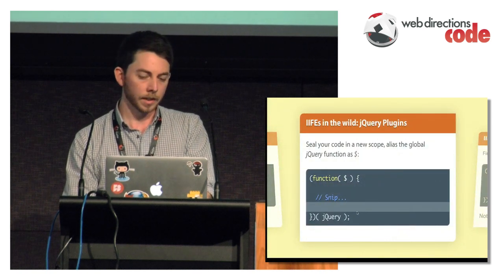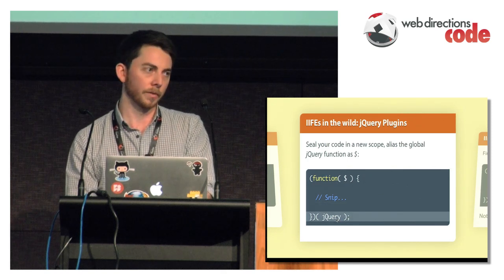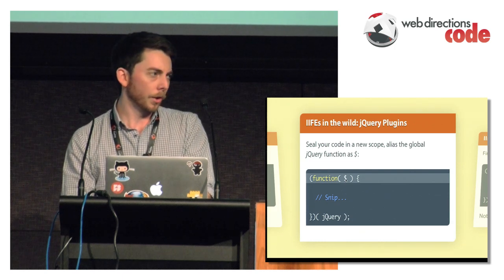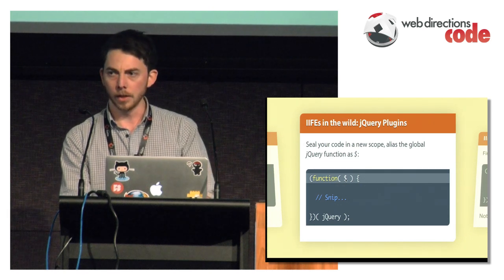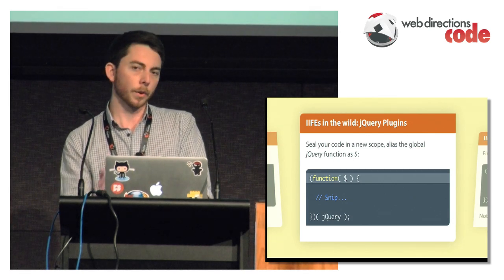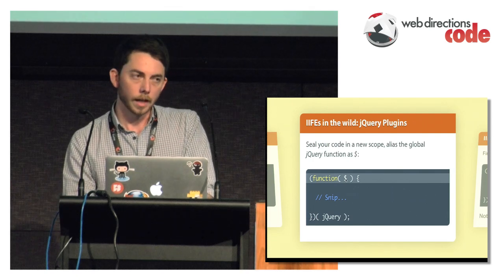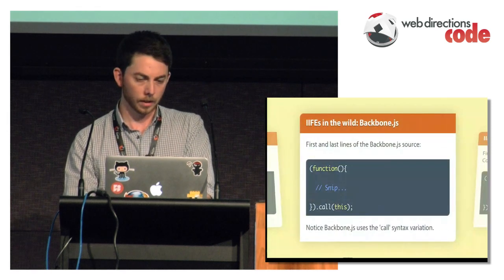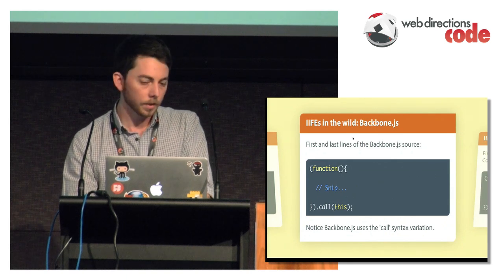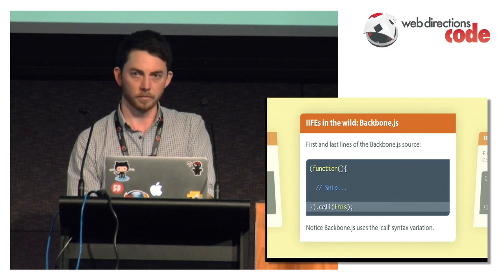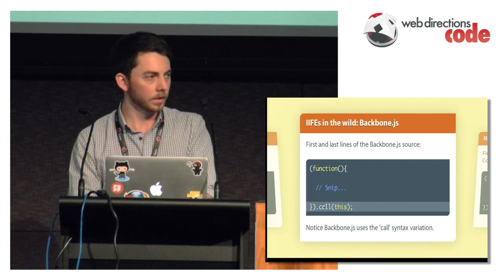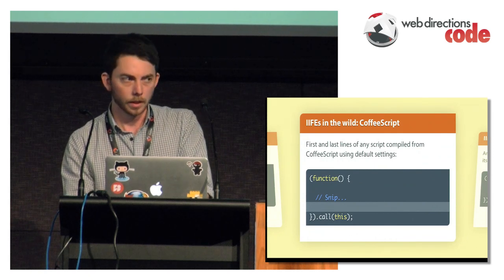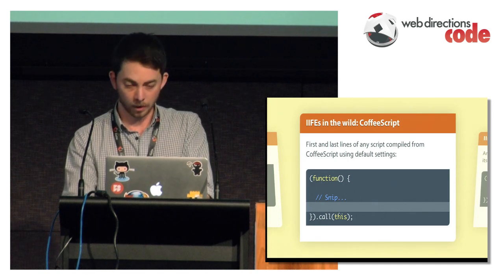jQuery plugins also use the same pattern. They pass the global jQuery variable in and alias it as $. The reason is that jQuery can run in no-conflict mode. If you've got a legacy page with jQuery and Prototype running side by side and Prototype was using the dollar sign already, you might use jQuery in no-conflict mode. This allows the jQuery plugin to work in any case. Backbone.js is also wrapped in an IIFE, using a slightly different syntax where it runs dot-call with this passed as the context, which is essentially the same thing. And anything you write with CoffeeScript, when compiled with default settings, is wrapped in an IIFE just like Backbone.